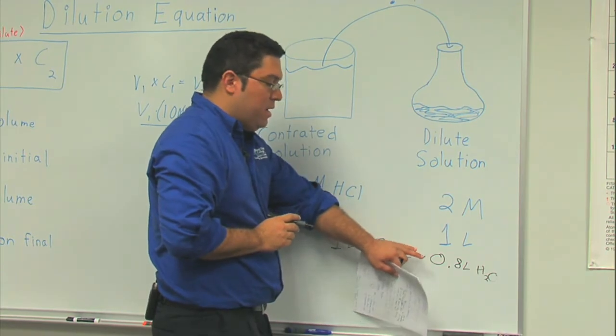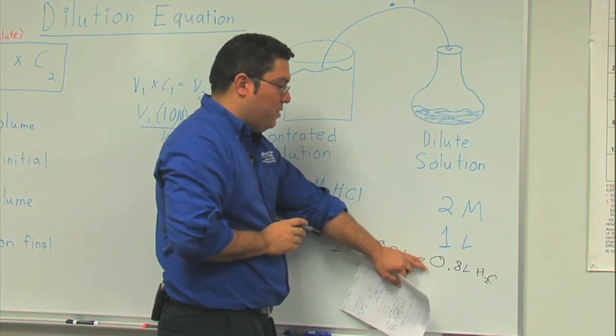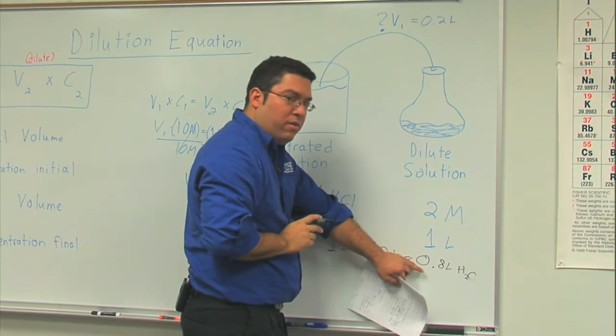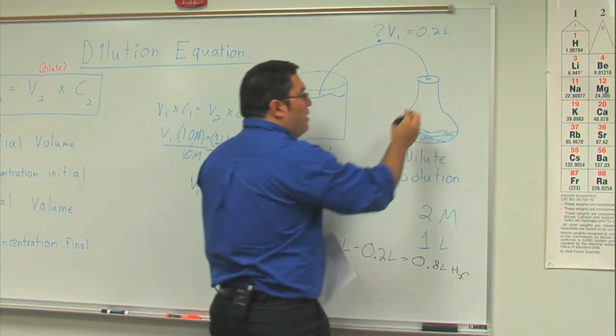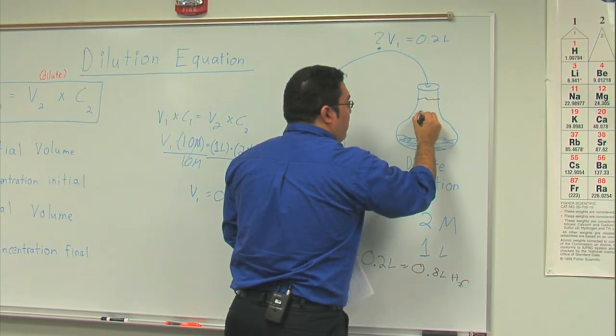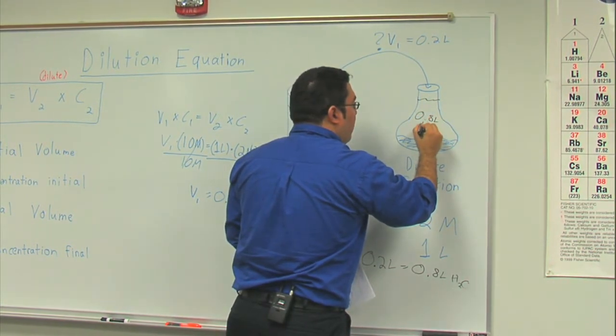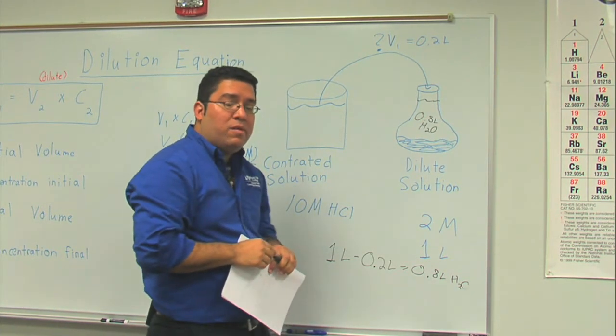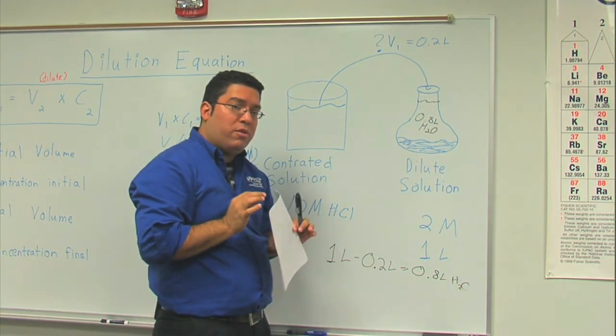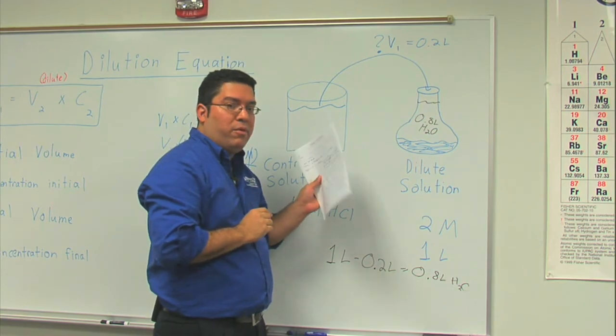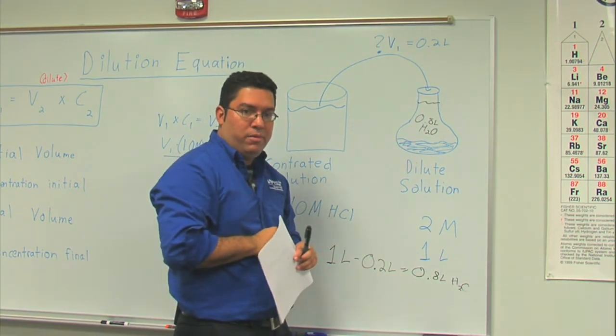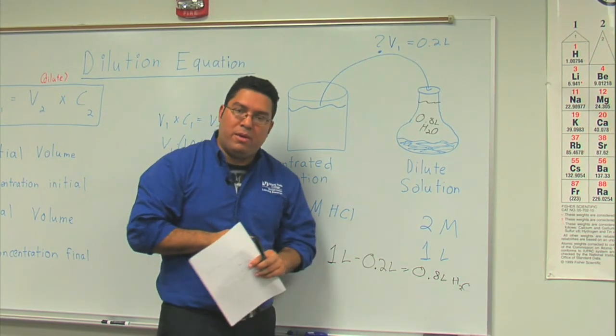This can come up once in a while. It's a very tricky question. It'll ask you not for the volume initial but it will ask you for how much water to add, so be on the lookout for that. That would just basically mean that here you need 0.8 liters of H2O. So one of the most important things when you're reading these questions is to be sure you're aware of what they're asking for exactly. If you use the dilution equation correctly you should have no problem with these questions. Thank you and I hope it helped.